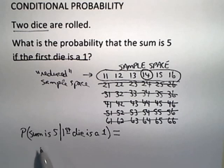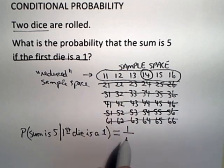So, the probability that the sum is 5, given that the first die is a 1, is 1 out of 6, because those are equally likely outcomes. So, the probability that the sum is 5, given that the first die is a 1, is 1 sixth.